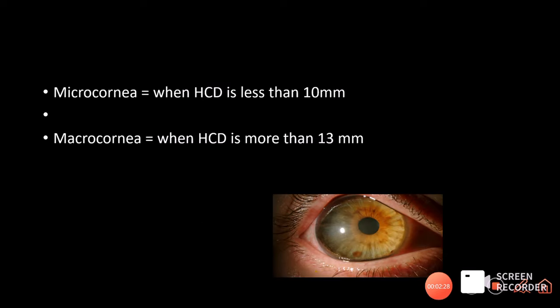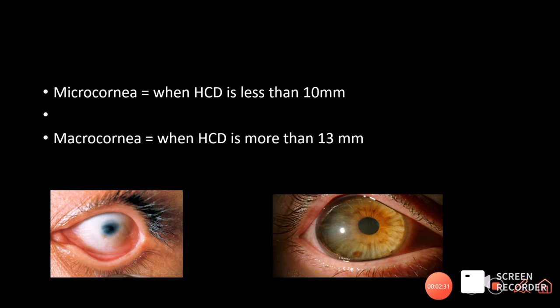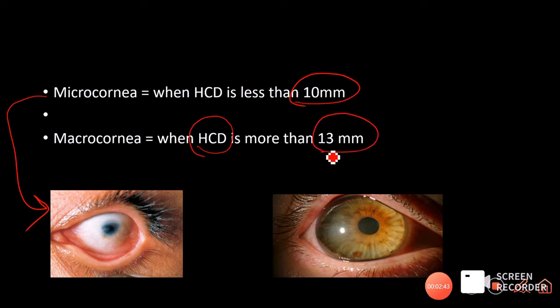Whenever the cornea is smaller — that is, the horizontal corneal diameter is less than 10 mm — it is called microcornea. When the horizontal corneal diameter is more than 13 mm, that cornea is called a macrocornea.